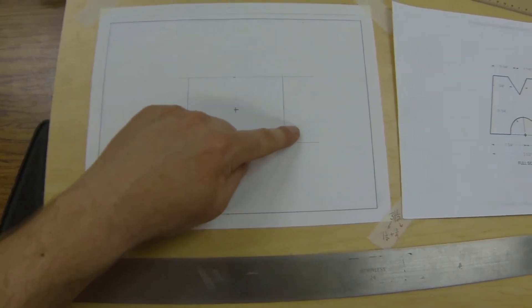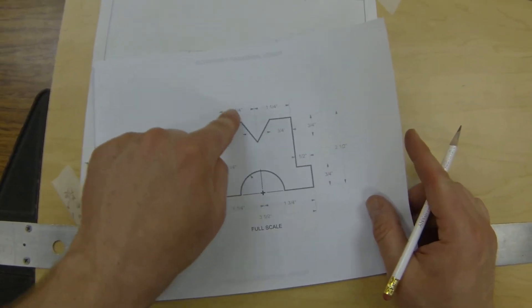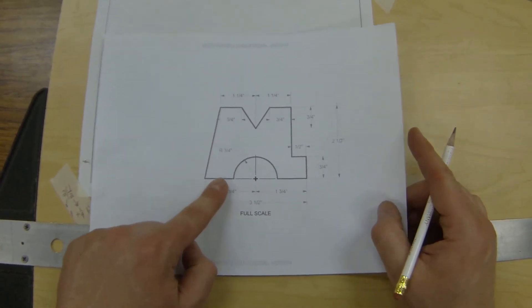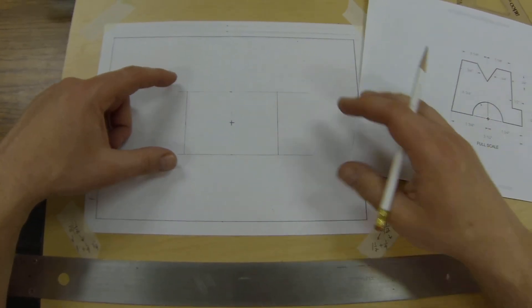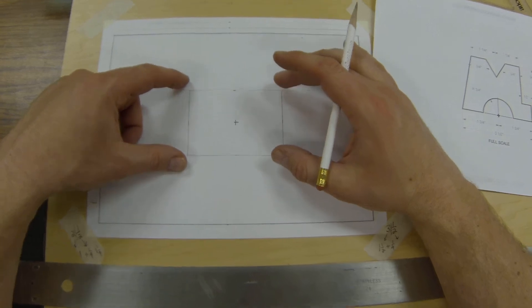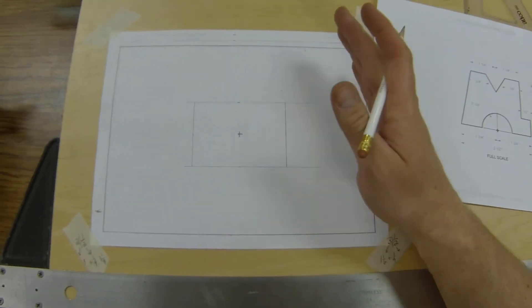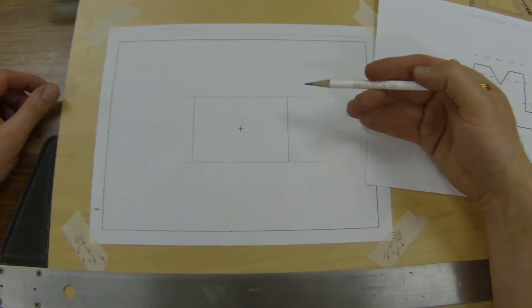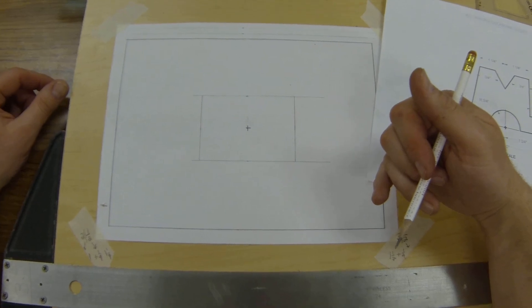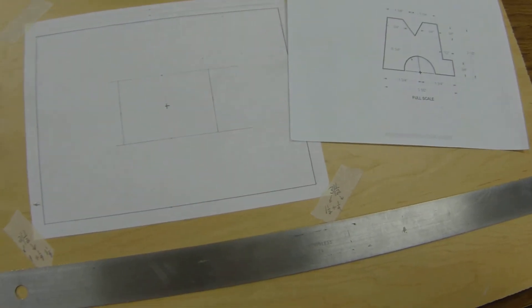That is the exterior shape for this object right here. This works for every project that you're going to do. You always want to build the exterior shape first, and then we can go and cut the part out, which will be in the following video. All right, good luck.